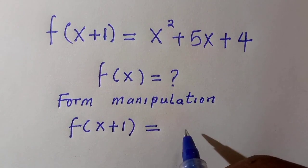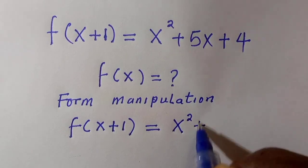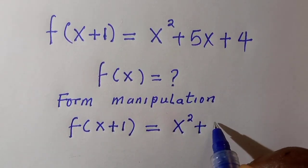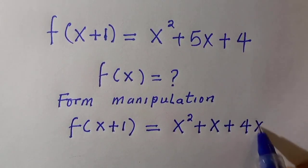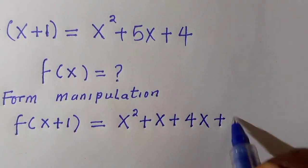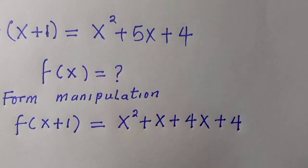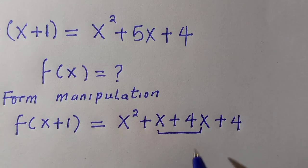equals, and for this right-hand side, which is x² + 5x + 4, I can write it as x² + 4x + x, or x² + x + 4x, then we have +4. This is still the same thing as x² + 5x + 4.